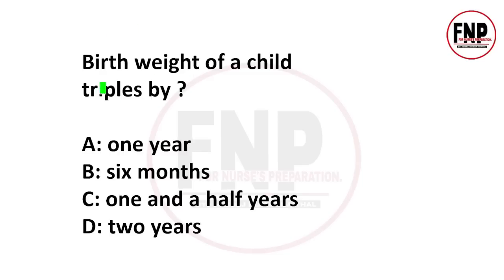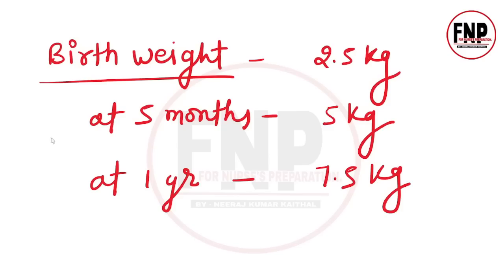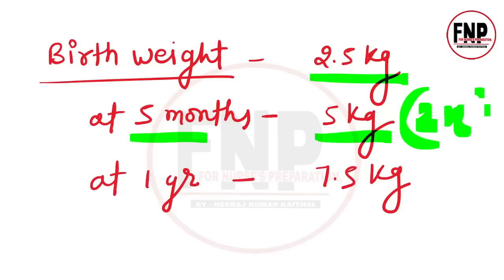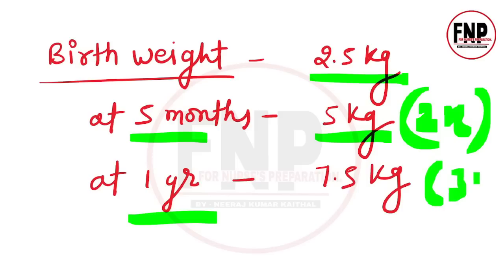Next question: birth weight of a child triples by? Options: 1 year, 6 months, 1.5 years, 2 years। Option A correct है। Newborn का birth weight 5 महीने में double हो जाता है और 1 year की उम्र होने पर birth weight triple हो जाता है — जैसे 2.5 kg का बच्चा 1 साल में 7.5 kg का हो जाएगा।